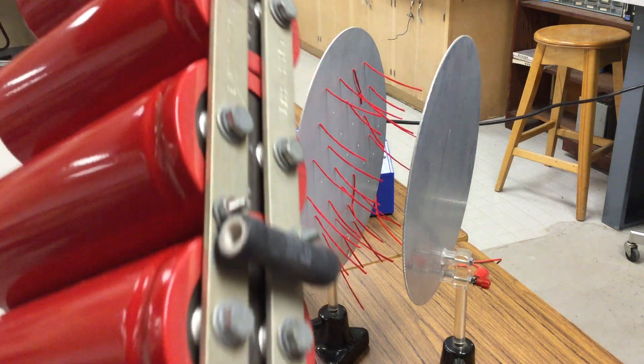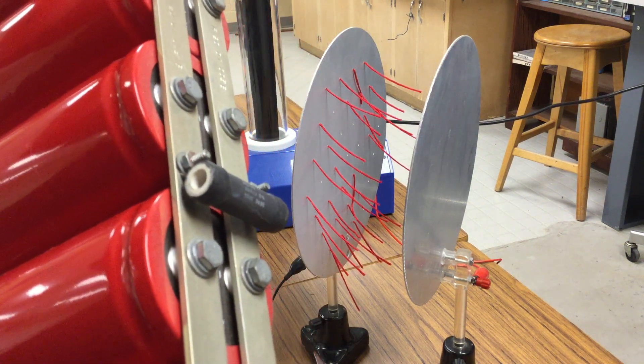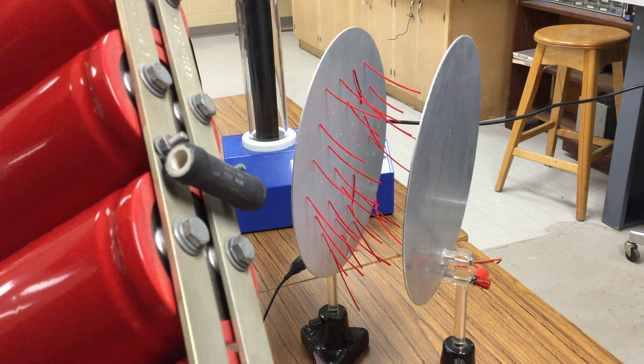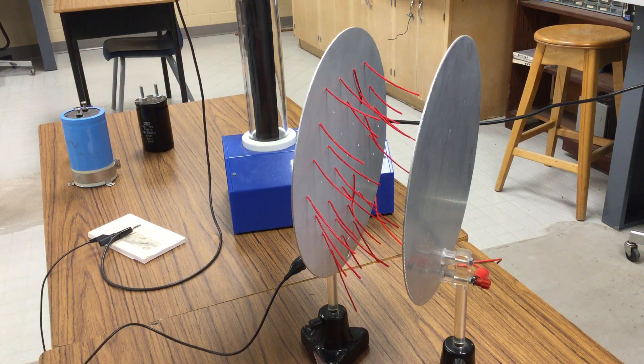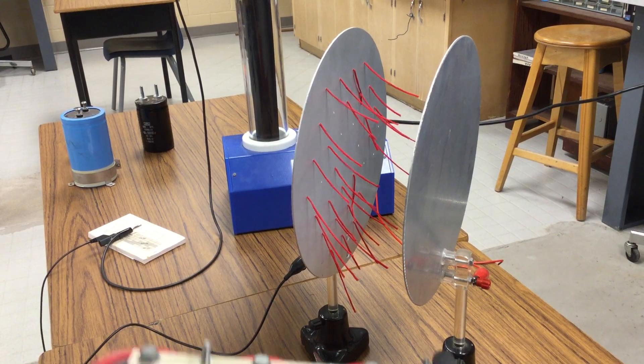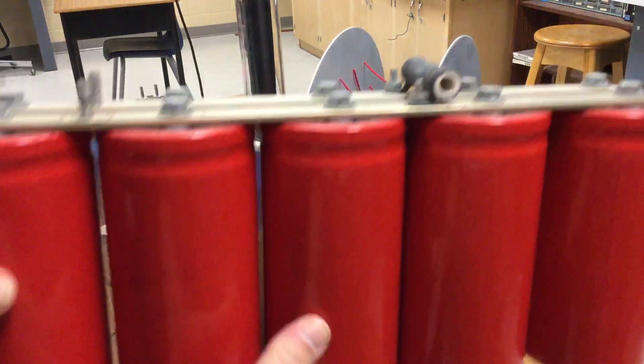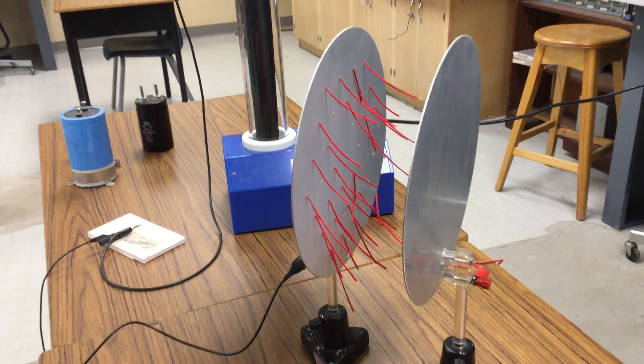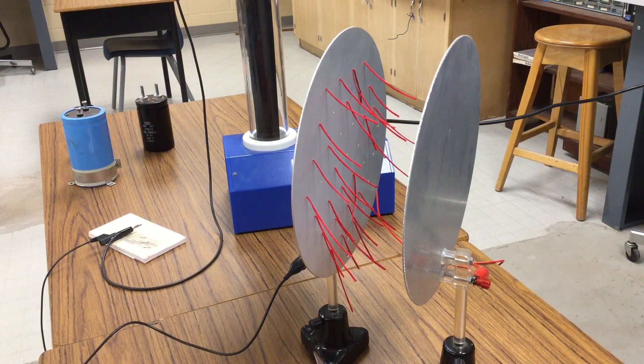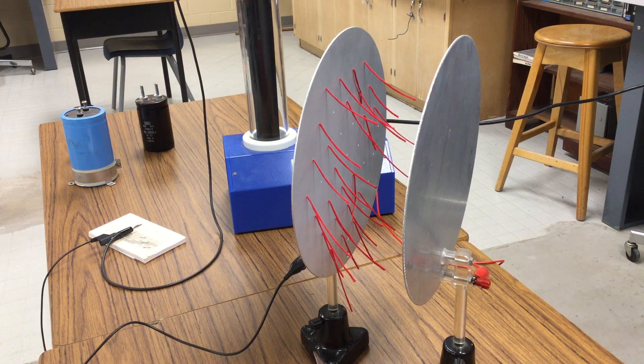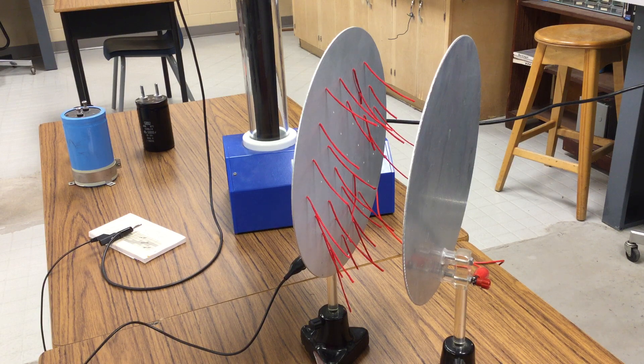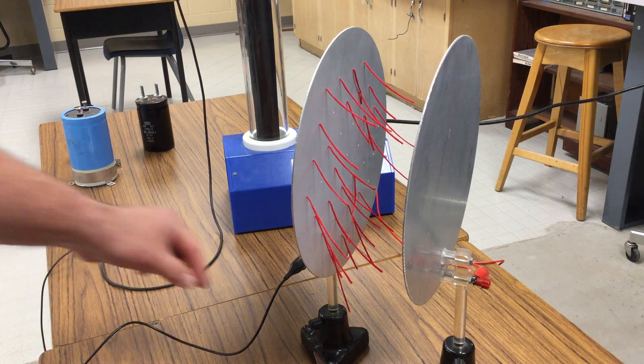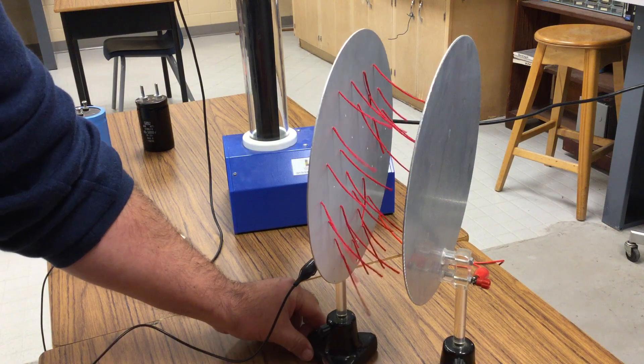That's why we usually put a discharge resistor into a capacitor bank network so that the capacitors will discharge themselves. Because this much capacitance can hold a lethal amount of charge. And that's the problem with capacitors, is they're sitting there, they can hold their charge for a long time, and that can be potentially fatal if it's a high enough voltage.